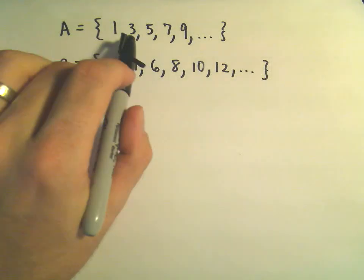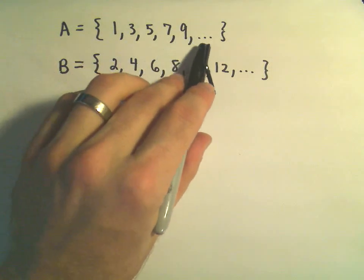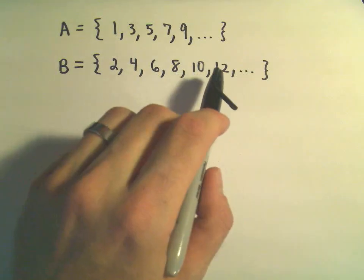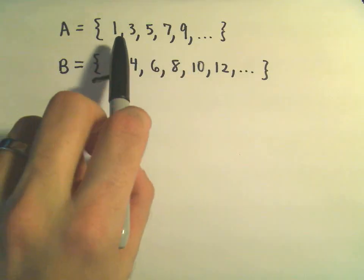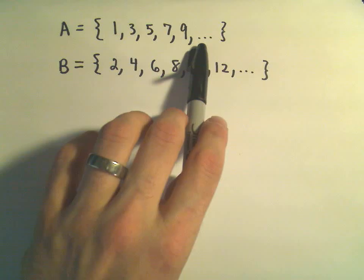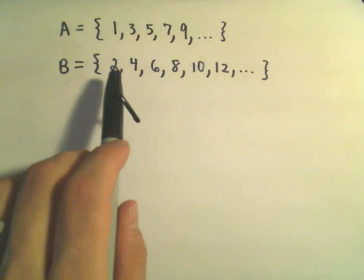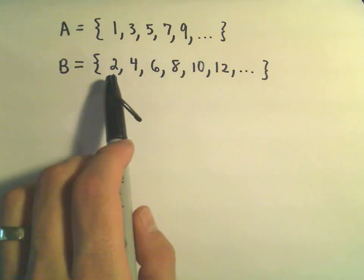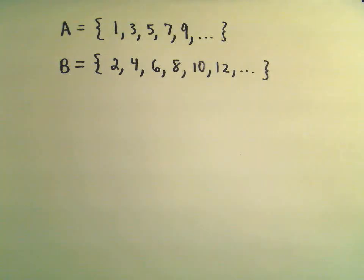Suppose our set A is 1, 3, 5, 7, 9, dot dot dot. So, assume this pattern continues forever. So, set A is just the odd numbers that are greater than 0. Set B, we've got 2, 4, 6, 8, 10, 12. We've got the even numbers greater than 0.